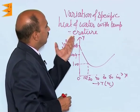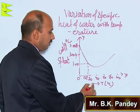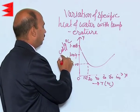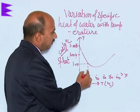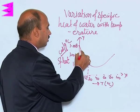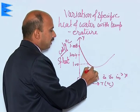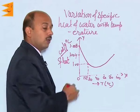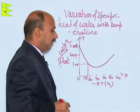Now, see this is the variation of specific heat of water with temperature. On the x-axis we have taken temperature in degree Celsius, on the y-axis we have taken specific heat in calorie per gram degree Celsius. When the graph is plotted with the help of experiment, the graph is like this. The variation of specific heat with temperature shows that 1 calorie per gram per degree Celsius specific heat occurs around 15 degree Celsius.